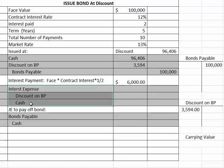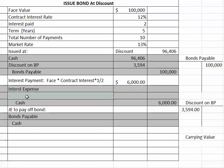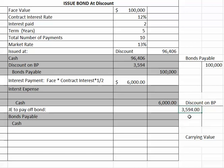Look at the journal entry to record the payment of interest. You're going to credit cash for the amount of the interest payment, $6,000. You're going to wait until the very end to plug in interest expense. Now the next thing you need to do is figure out how to amortize the discount. The discount on bonds payable has a debit balance of $3,594, and we're going to amortize this with every interest payment — taking a little bit out of this account each time.